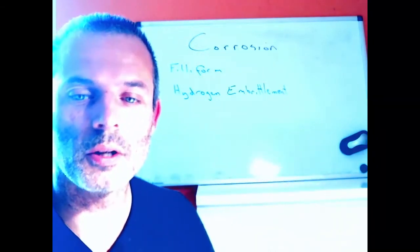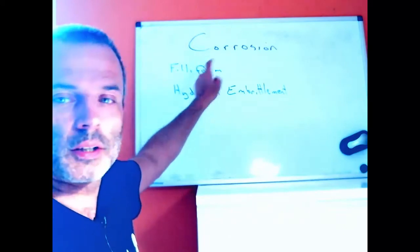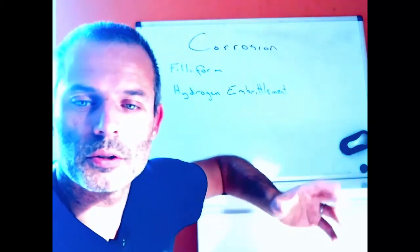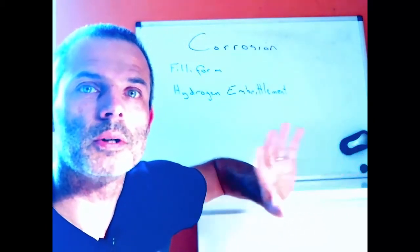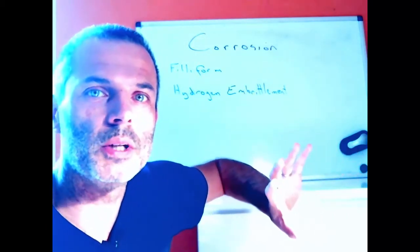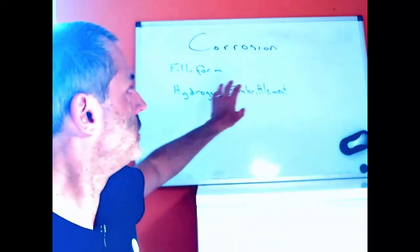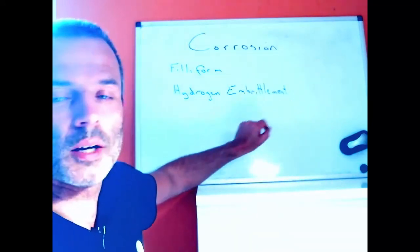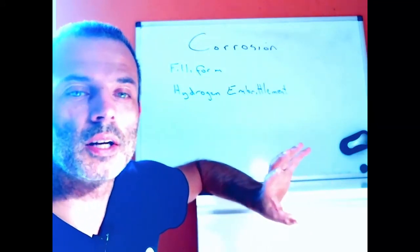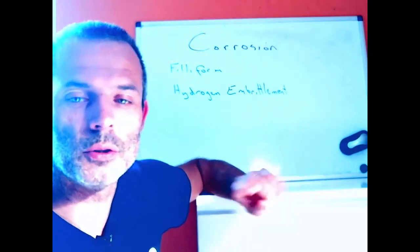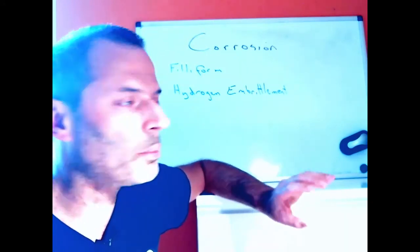For completeness: filiform corrosion tends to happen on aluminium and is essentially the opposite of cathodic delamination, in that the anode is where the main reaction happens. We'll cover that another time.